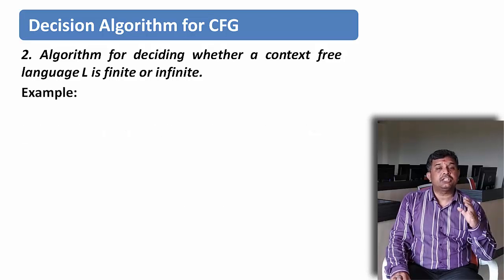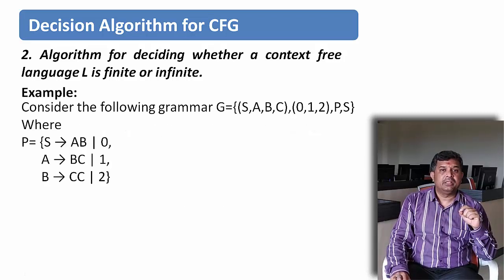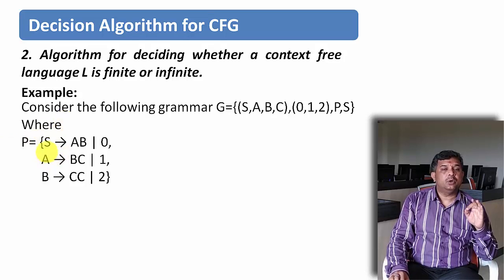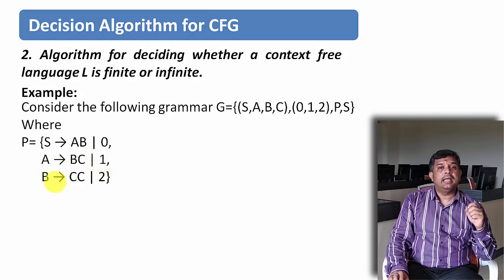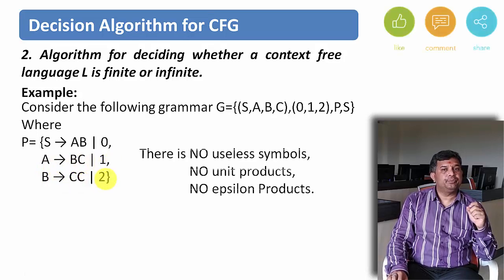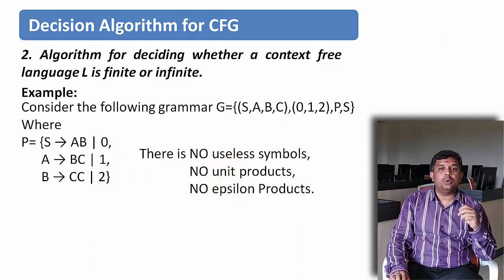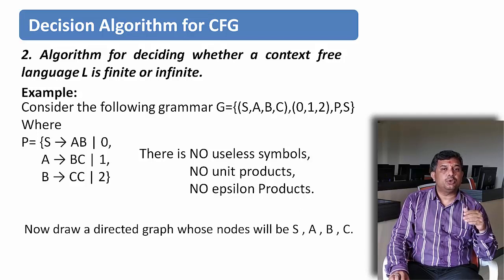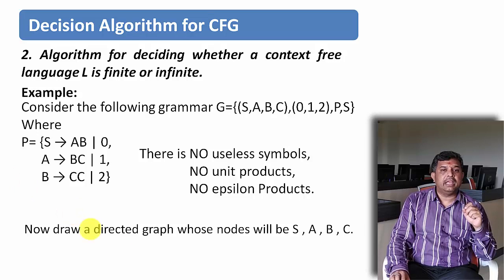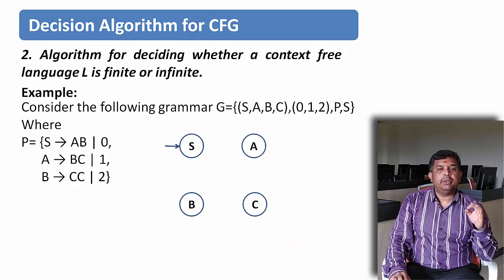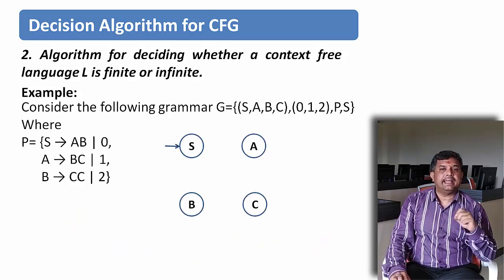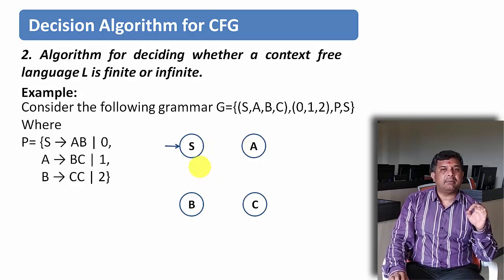Let us try to understand this with the help of an example. The grammar is given with production rules: S derives AB or 0, A derives BC or 1, and B derives CC or 2. In this grammar we can see there is no useless symbol, no unit productions, and no epsilon productions. So we will take all the variables and try to draw the directed graph — the variables S, A, B, and C will become the nodes of the graph.